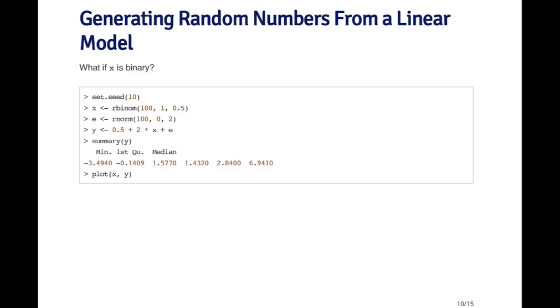This comes from the binomial distribution with n equals 1 and p equals 0.5. So the probability of 1 is 0.5. I generate 100 of those. Then I generate my normal error term, which has mean 0 and standard deviation 2, and I add them all together to produce my y.